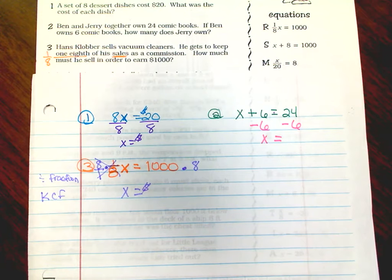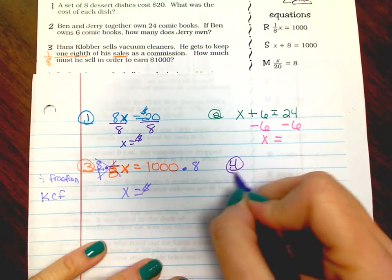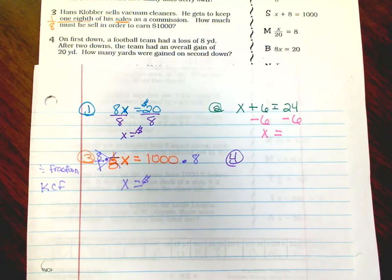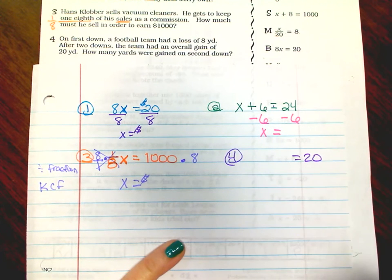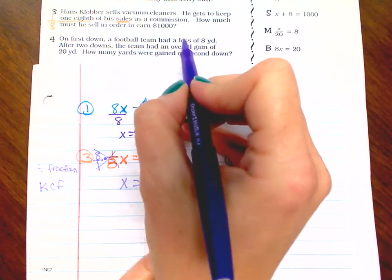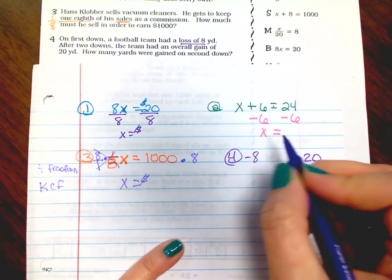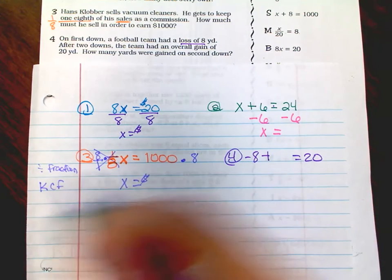Number four: on first down a football team had a loss of eight yards. After two downs the team had an overall gain of 20 yards. How many yards were gained on second down? So we know it's gonna equal 20 yards, they had a loss of eight on the first down, but then they had a gain on the second down.